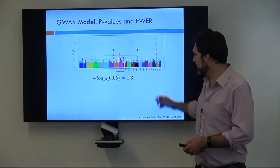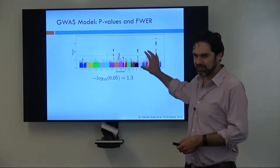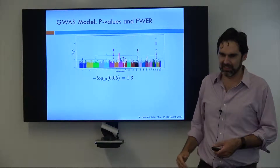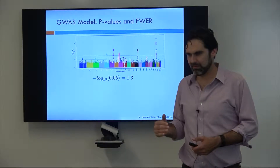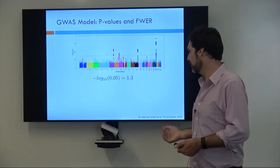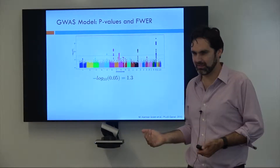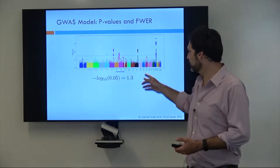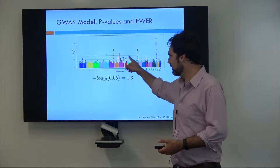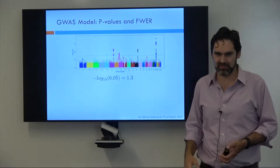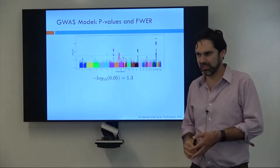As you can see, many of the variants in the genome have a p-value more significant than 1.3. So should we assume that all of these variants are significantly associated?